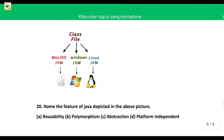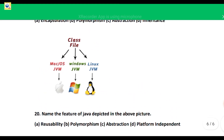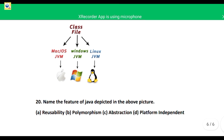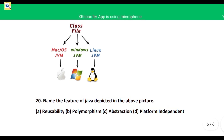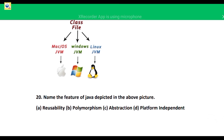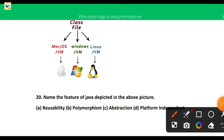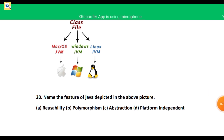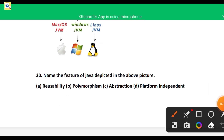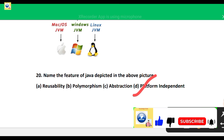The last question of this video: there is a class file executed by JVM for different platforms. The options are reusability, polymorphism, abstraction, and platform independent. JVM executes the bytecode on different platforms, which makes Java a platform independent language. So the correct feature of Java here is platform independent. That's all for today's video — if you find this video useful, kindly share it with your friends.